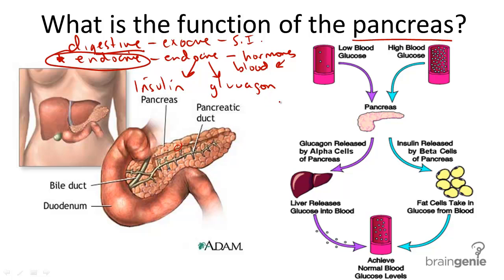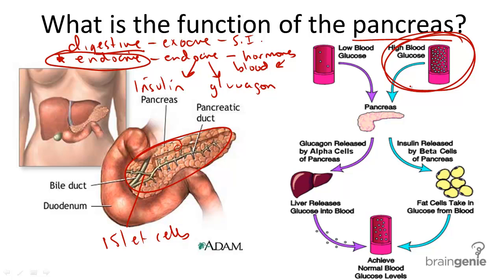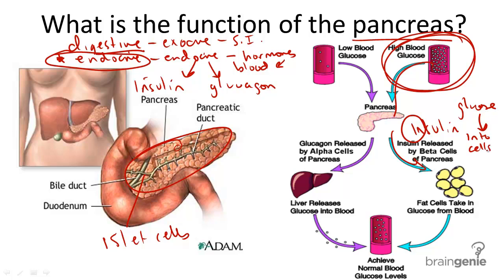When the specialized cells in the pancreas, called islet cells, recognize high blood glucose levels, they produce insulin. And when you look at the word insulin, think 'in' — we take glucose from the blood and we put it into cells for energy.